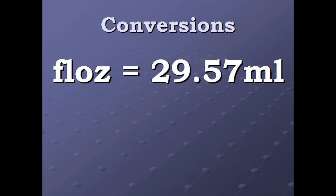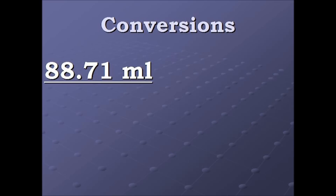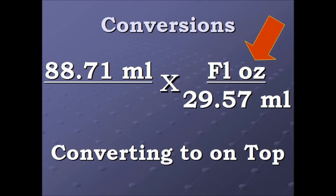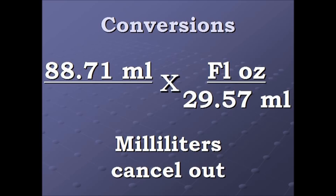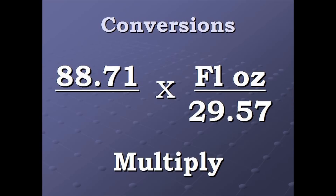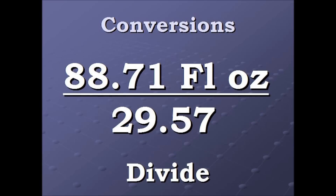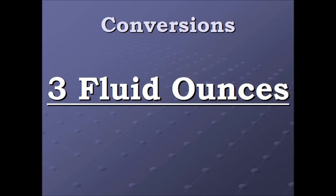This time we put the fluid ounces on top of the conversion factor ratio, which is still equal to the number one. We have 88.71 milliliters and multiply by our conversion factor. Notice that what we're converting to — the fluid ounces — is on top, and we cancel out the milliliters. We then multiply 88.71 into the fluid ounces and divide. Once we divide, we're left with just three fluid ounces, and this is our solution.